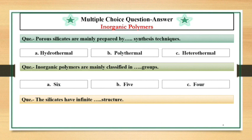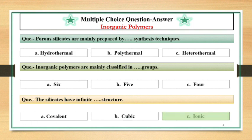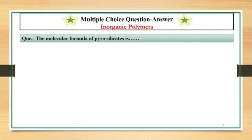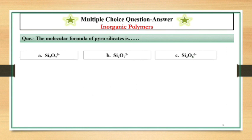The silicates have Infinite dash dash dash Infinite dash dash structure. Ionic structure. The molecular formula of Pyrosilicates is Si2O7 6-.